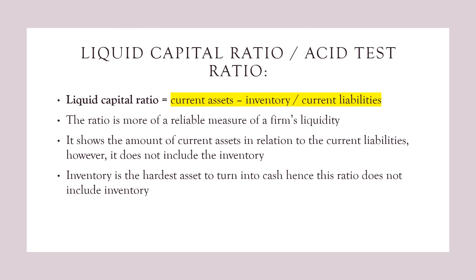Now, the liquid capital ratio, or asset test ratio. Liquid capital ratio is current assets minus inventory divided by current liabilities. This ratio is a more reliable measure of a firm's liquidity. It shows the amount of current assets in relation to the current liabilities. However, it does not include inventory, because inventory is the hardest asset to turn into cash — hence this ratio does not include it.